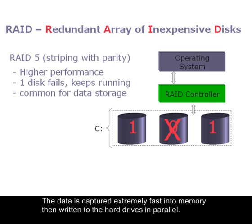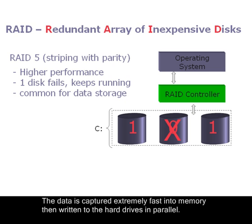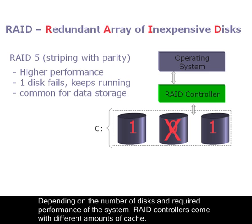This benefit is made possible by having cache memory on the RAID controller. The data is captured extremely fast into memory, then written to the hard drives in parallel. Depending on the number of disks and the required performance of the system, RAID controllers come with different amounts of cache. Take advice from your pre-sales expert to specify the right amount.